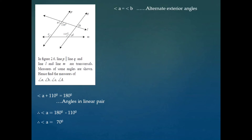To find the measure of angle B: angle A and angle B are alternate exterior angles, which must be congruent because line P is given to be parallel with line Q. That is why angle A is equal to angle B. We just found the measure of angle A to be 70 degrees, so angle B is also 70 degrees.